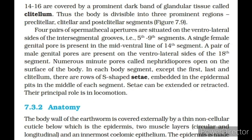In a mature worm, segments 14 to 16 are covered by a prominent dark band of glandular tissue called clitellum. Thus the body is divisible into three regions: preclitellar, clitellar and postclitellar segments. Four pairs of spermathecal apertures are situated on the ventrolateral sides of the intersegmental grooves of the 5th to 9th segments. A single female genital pore is present in the midventral line of the 14th segment. A pair of male genital pores are present on the ventrolateral sides of the 18th segment. Numerous minute pores called nephridiopores open on the surface of the body. In each body segment, except the first, last and clitellum, there are rows of S-shaped setae embedded in epidermal pits; setae can be extended or retracted and their principal role is in locomotion.